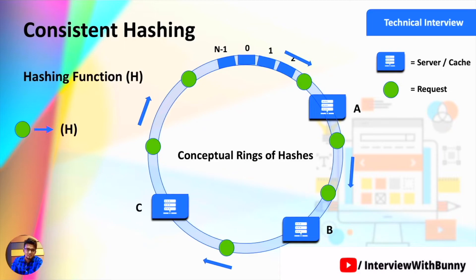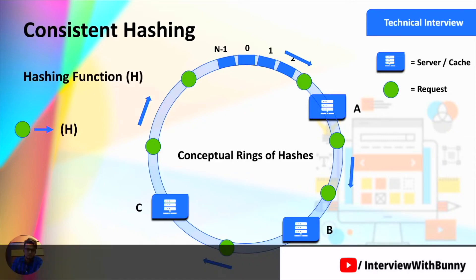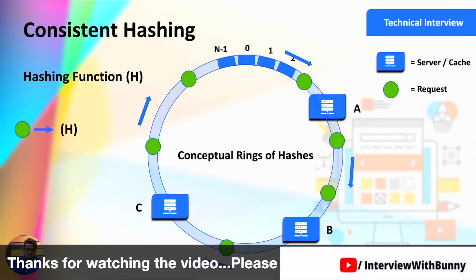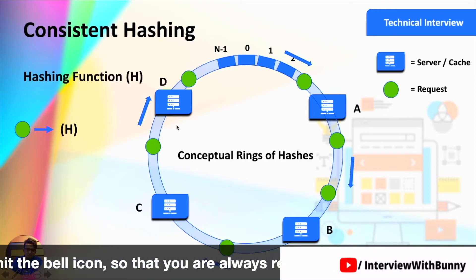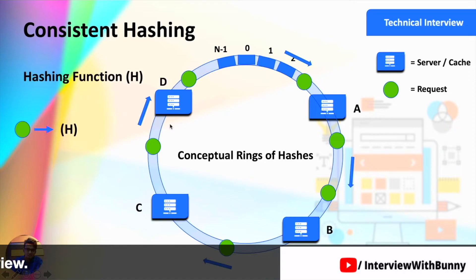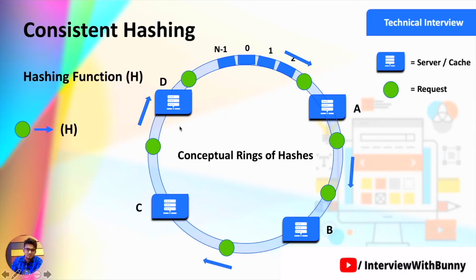With this approach of consistent hashing, we have simplified the job of removing and adding servers in a distributed system, and we have managed to distribute load uniformly across different servers. For example, if at any point we introduce a new server between servers A and C, we do not have to change a large portion of the hashing mechanism — only a small subset of requests between servers C and D needs to be reassigned. All other requests and servers continue to work as-is without any problem.